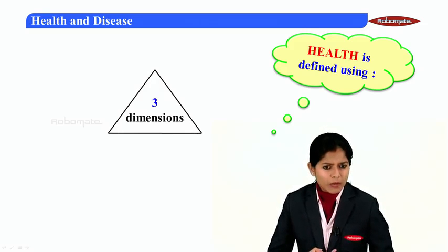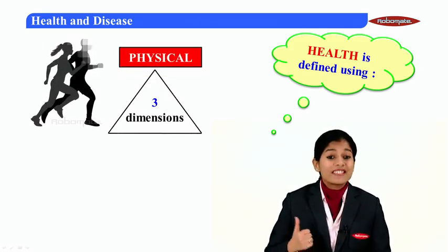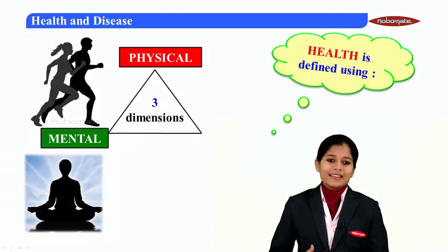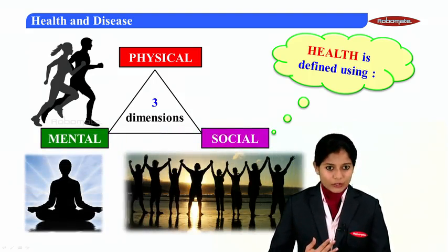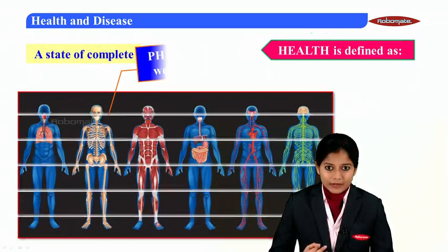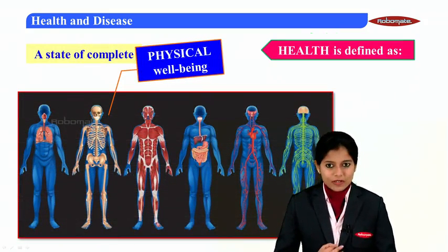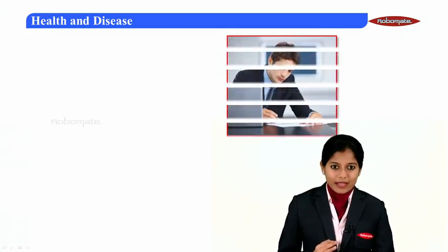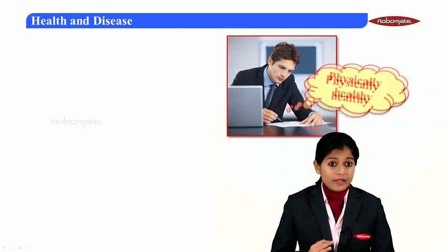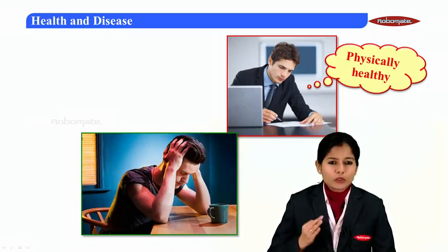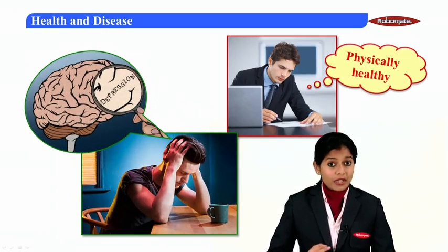Health is defined using three important dimensions. The first is physical, the second — very important — is mental, and the third is social. Health is defined as a state of complete physical well-being. A person may be physically healthy, but if they are bound with too much stress or any imbalances in the body, it can lead to a state called depression.